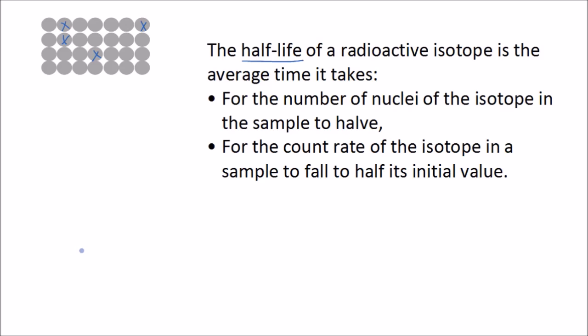So if the number of nuclei that an isotope starts off with is 600, so it starts off with 600 radioactive nuclei and it takes two hours for that to be reduced to 300 nuclei, that means that the half-life of that isotope is two hours. And it also means that in another two hours the number of nuclei remaining will have fallen by another half to 150 and so on.